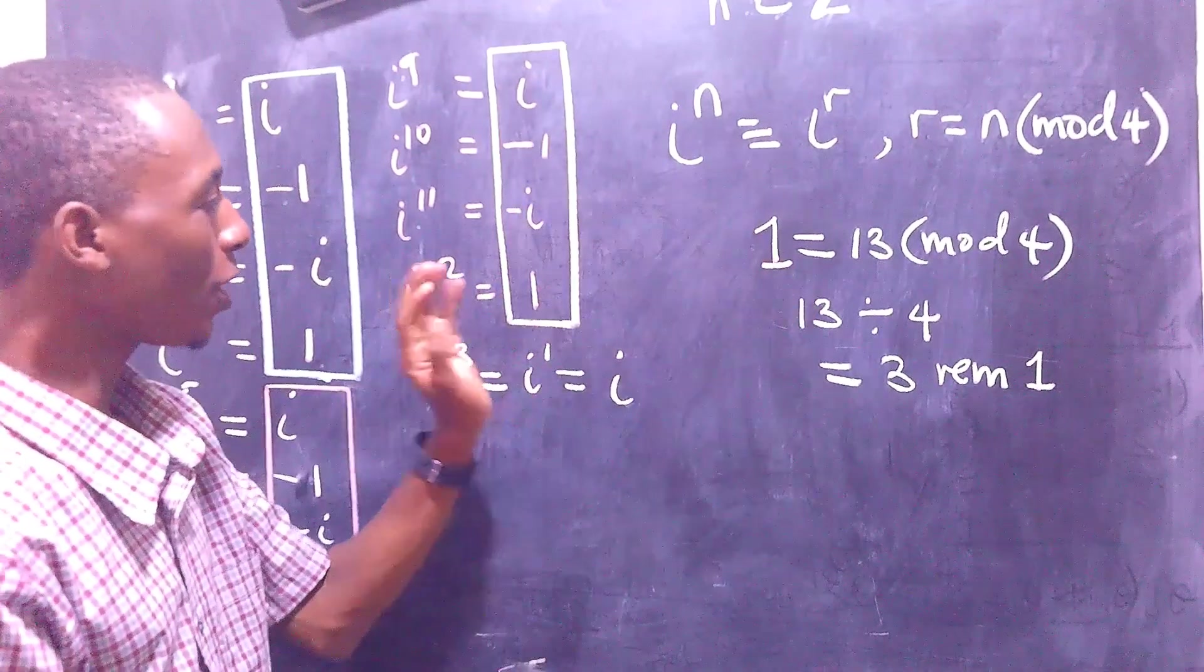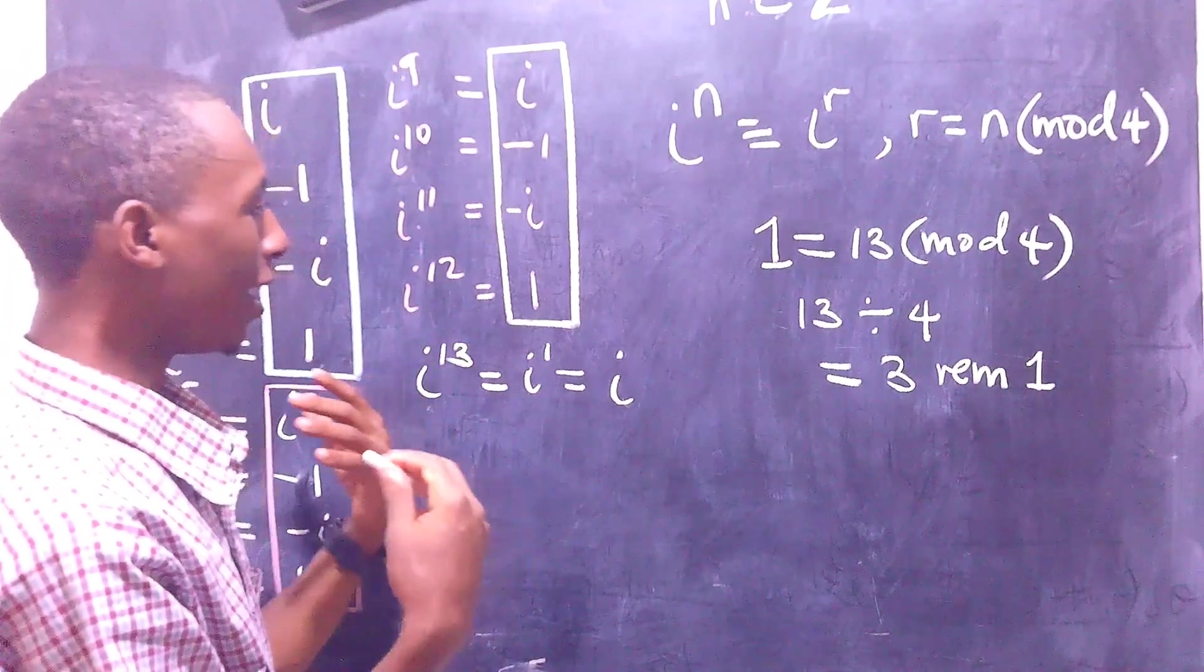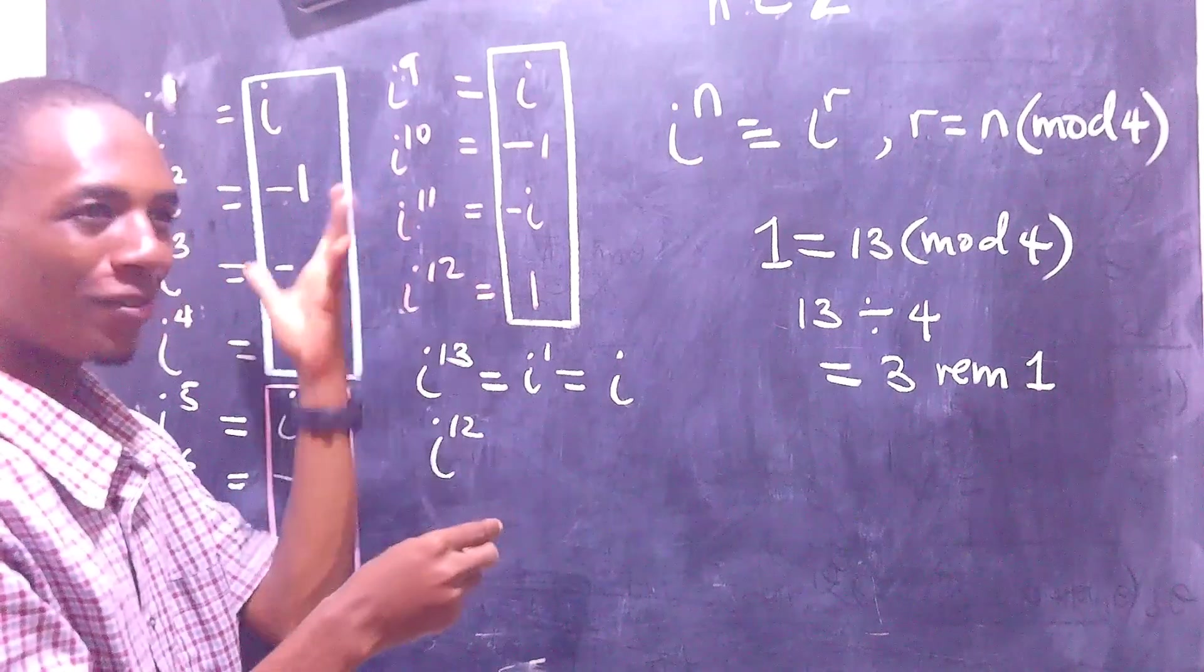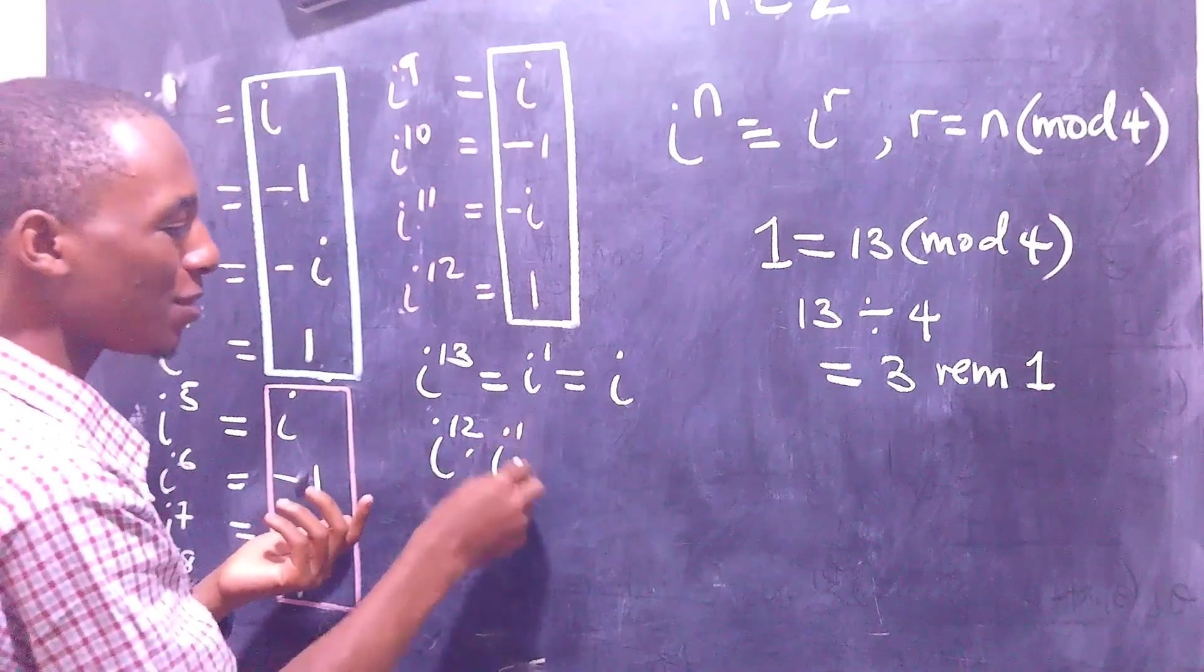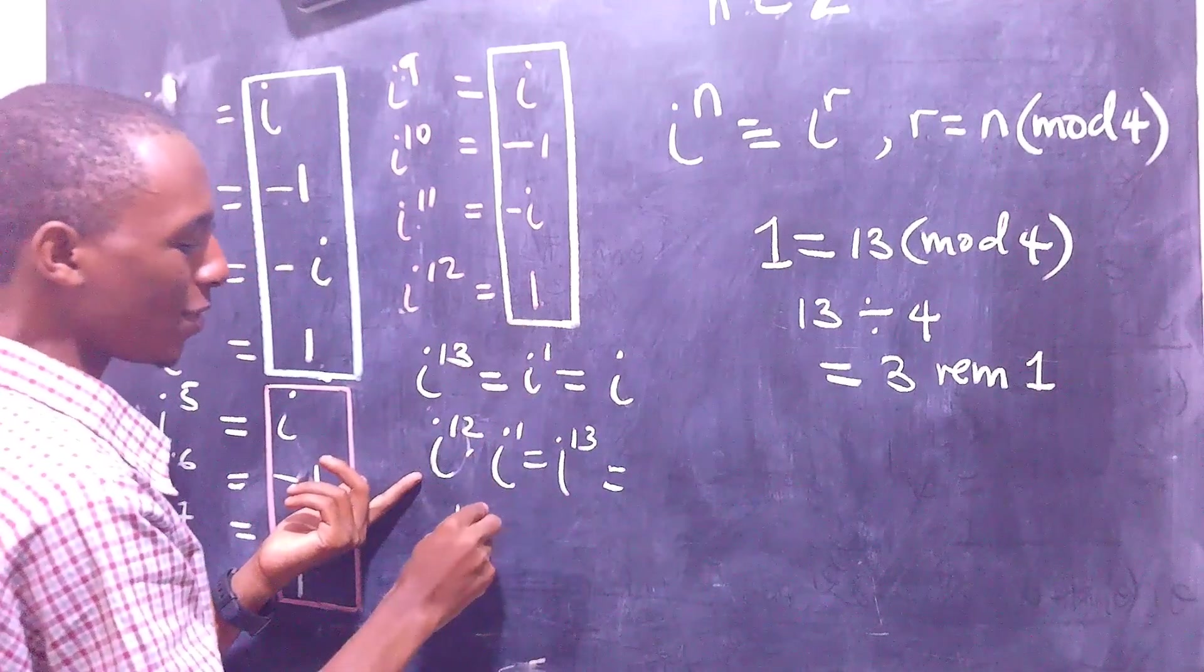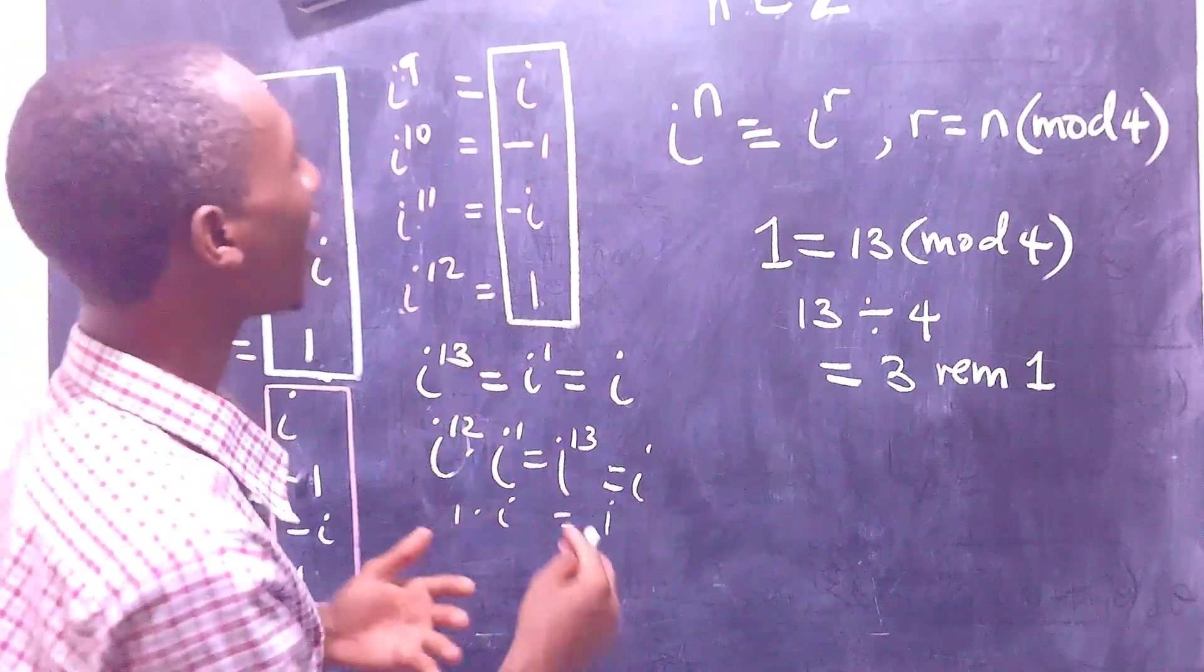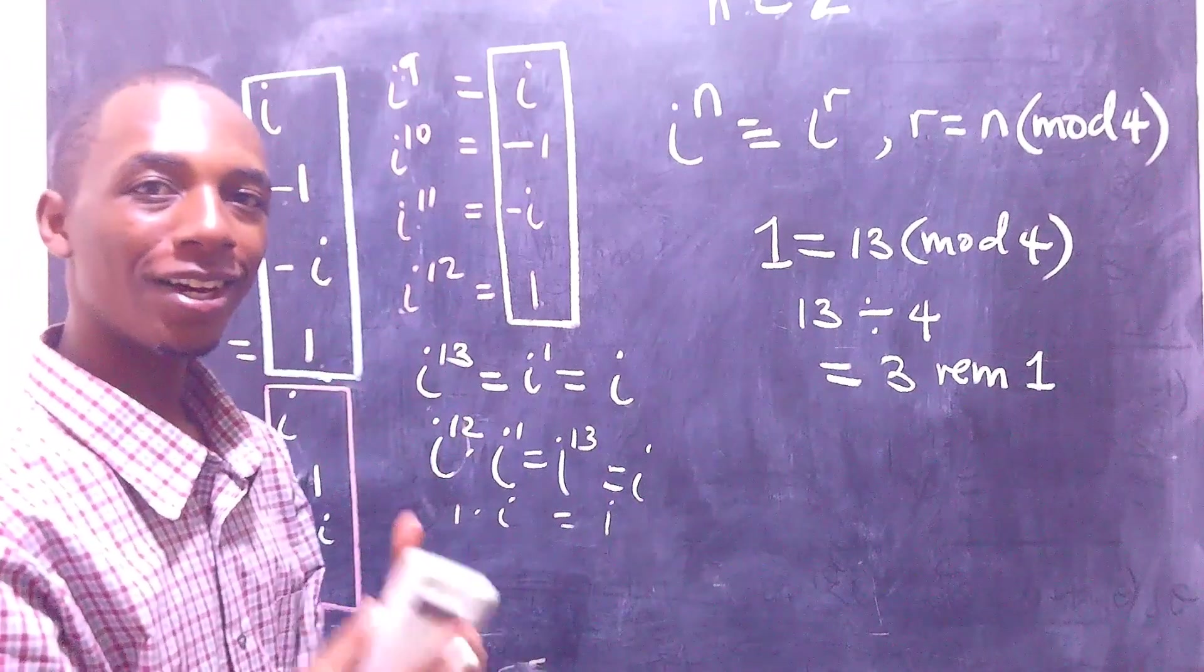But why not just do it from scratch and see if that works? Let's assume we already trust that i to the power 12 equals 1. So i to the power 12 times i becomes i to the power 13, and you can already see that if this is 1 times i, then that's going to be i. There you go, so that's right. This actually works for even higher powers, that's the beauty with it, let's try it out with really huge powers.